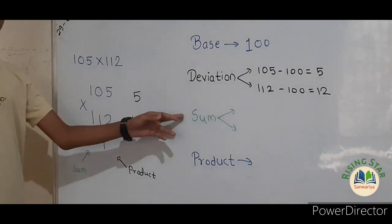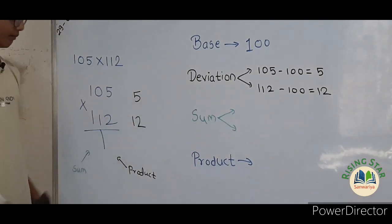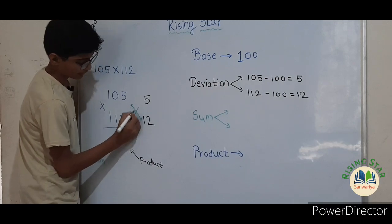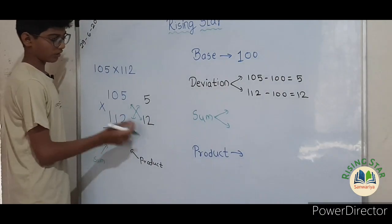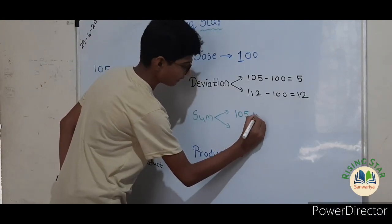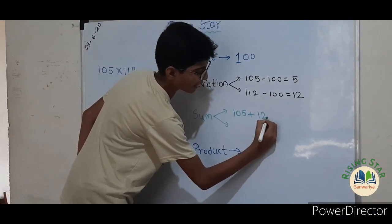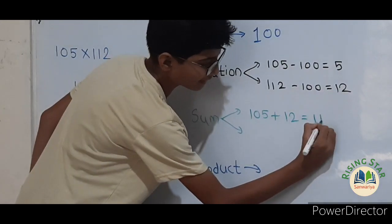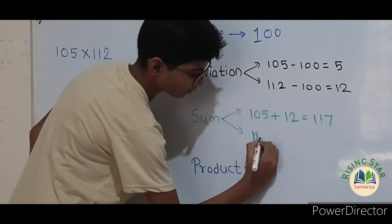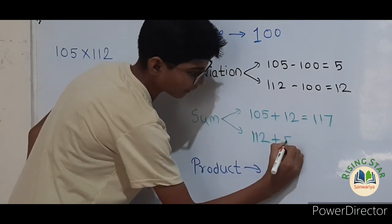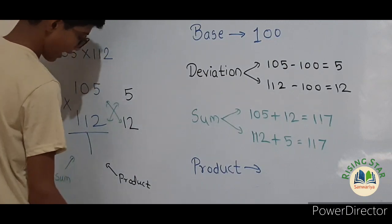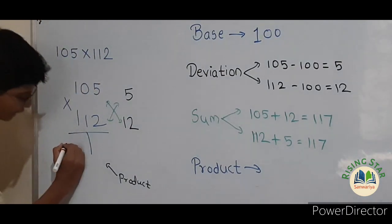Next is to find the sum. You can add either pair — the answer will be the same. One hundred and five plus twelve equals one hundred and seventeen, and one hundred and twelve plus five also equals one hundred and seventeen. So just write one hundred and seventeen here.